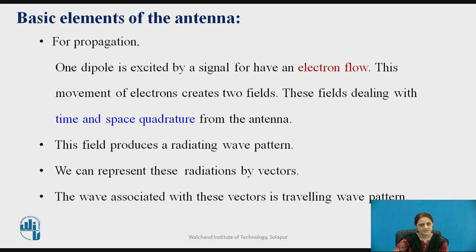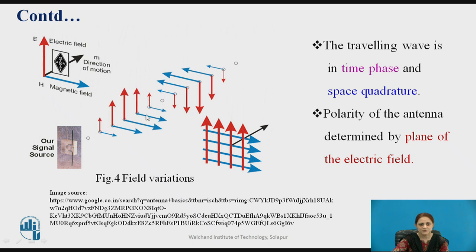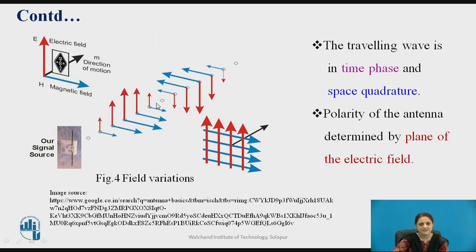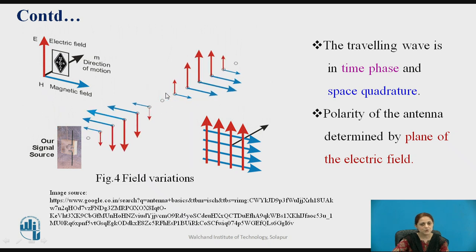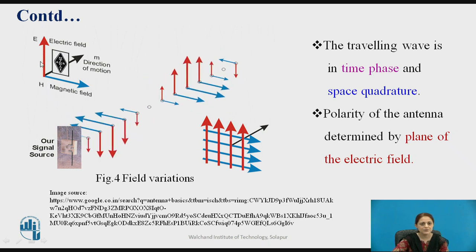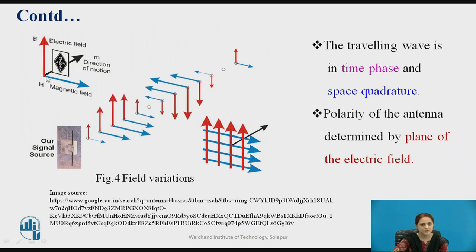Now the basic elements of the antenna. Consider a current-carrying conductor where electrons are flowing. When this movement of electrons occurs, it creates two fields dealing with time and space quadrature from the antenna, and this field produces a radiating wave pattern. We can represent these radiations by vectors, and the associated wave is a traveling wave pattern. The electric field and magnetic field are varying with time phase and space quadrature, and the polarity of the antenna is determined by the plane of the electric field. Both fields are perpendicular to each other and to the direction of propagation.